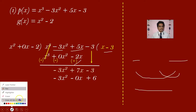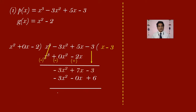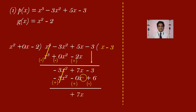Now do the subtraction. Change the signs of the second polynomial: minus 3x square becomes plus 3x square, minus 0x becomes plus 0x, and plus 6 becomes minus 6. So minus 3x square plus 3x square get cancelled, giving 0. You have plus 7x and 0, so plus 7x remains. This is minus 3 and minus 6: minus 3 minus 6 gives minus 9.